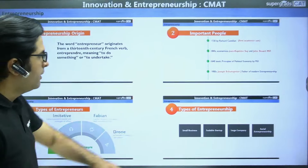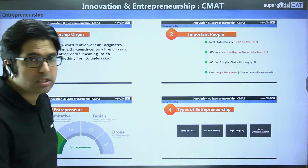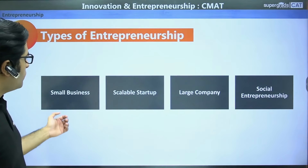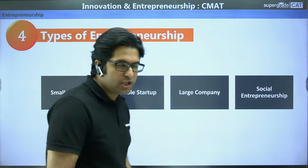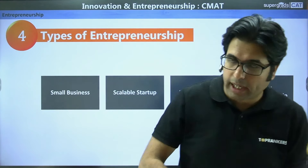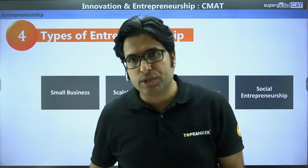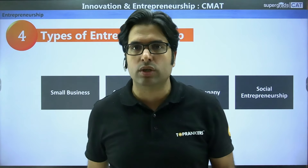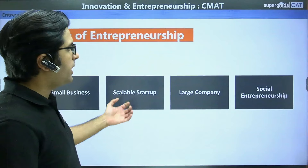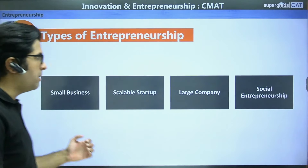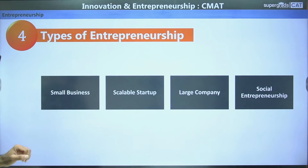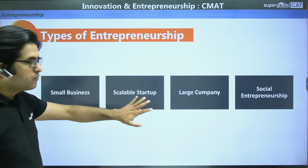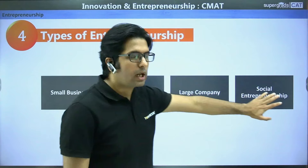The last part covers the broad classifications of entrepreneurship. There are four broad categories to remember for the exam: small business, scalable startup, large company, and social entrepreneurship. In day-to-day usage there are many more classifications, but theoretically these four are key. Small business and scalable startup differ by size, while social entrepreneurship differs by type of objective.